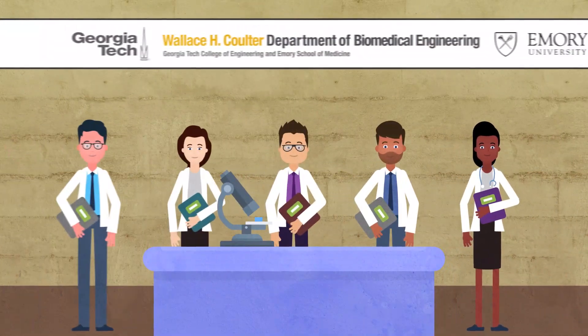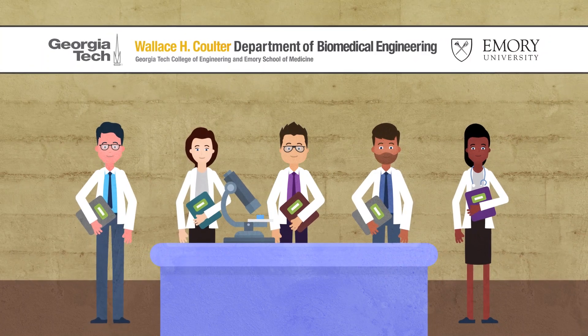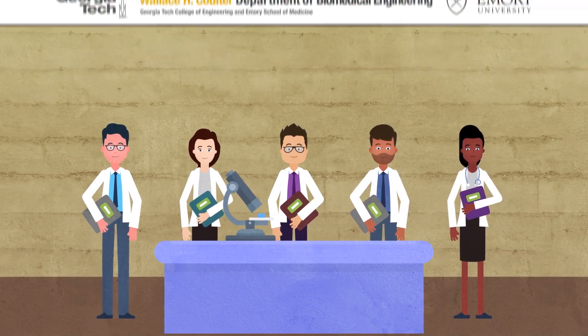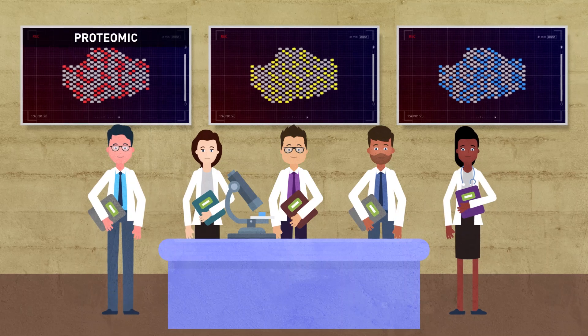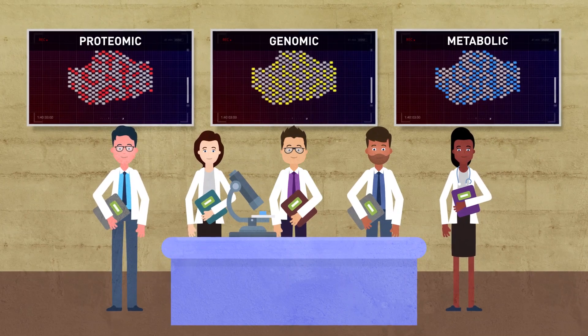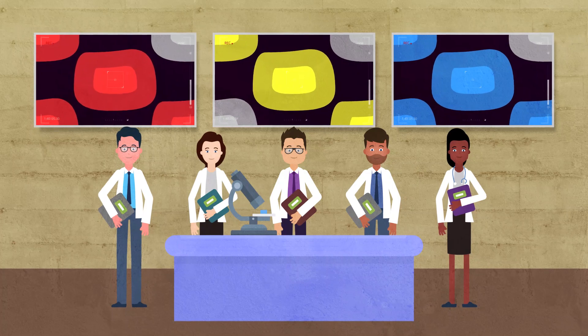Scientists in the Koskun lab in the biomedical engineering department at Georgia Tech and Emory University are creating spatially resolved proteomic, genomic, and metabolic profiles of human cancers at the single cell level.